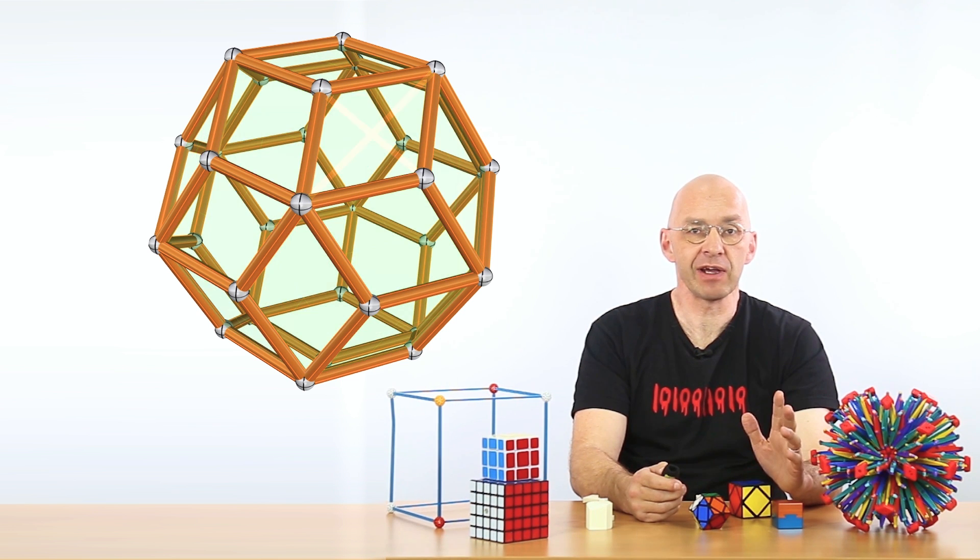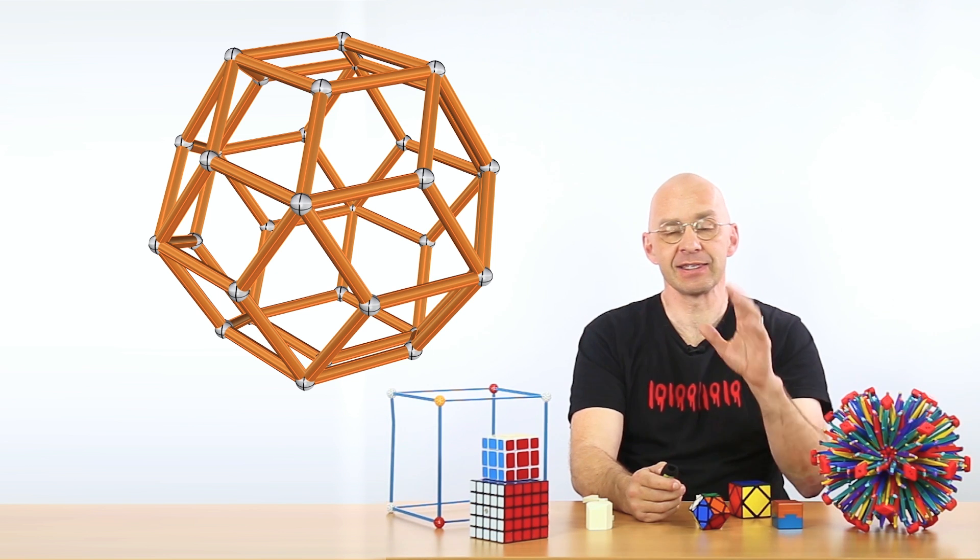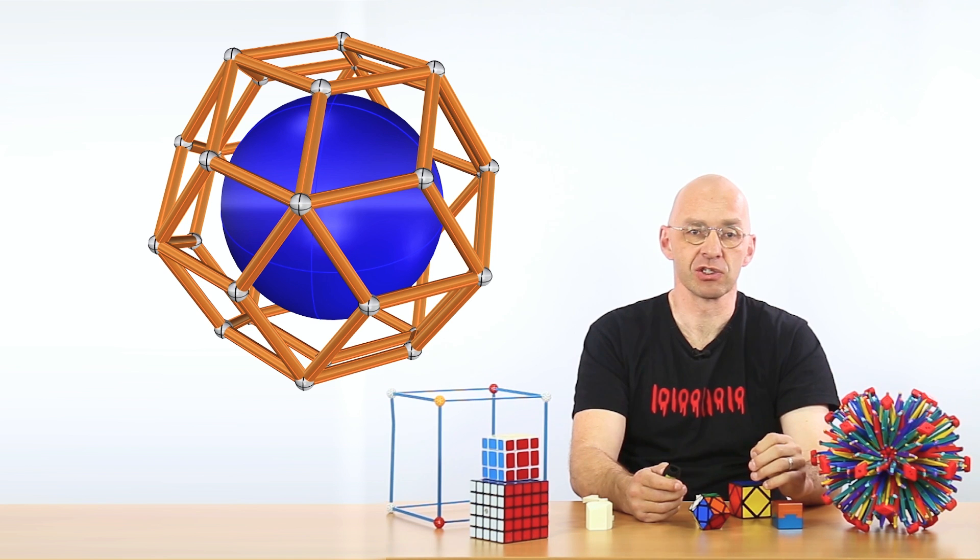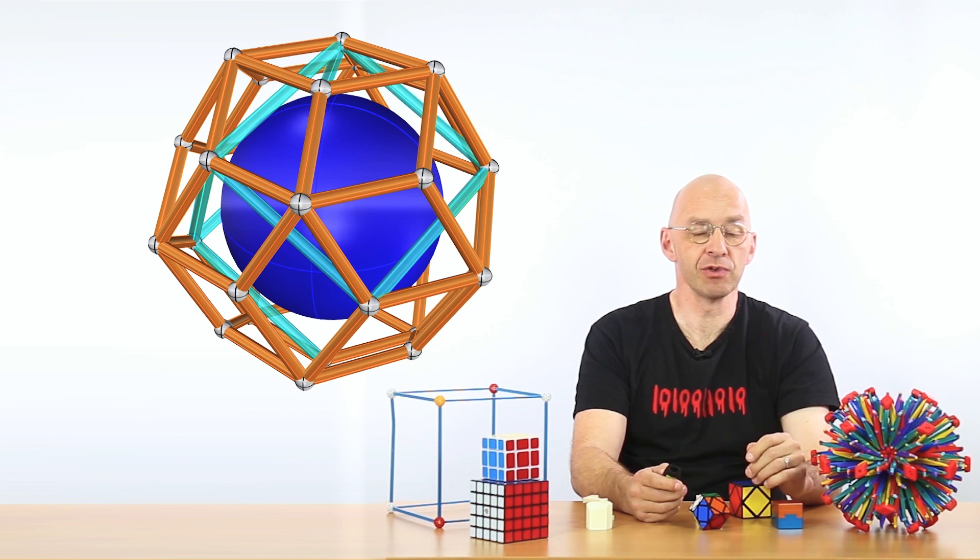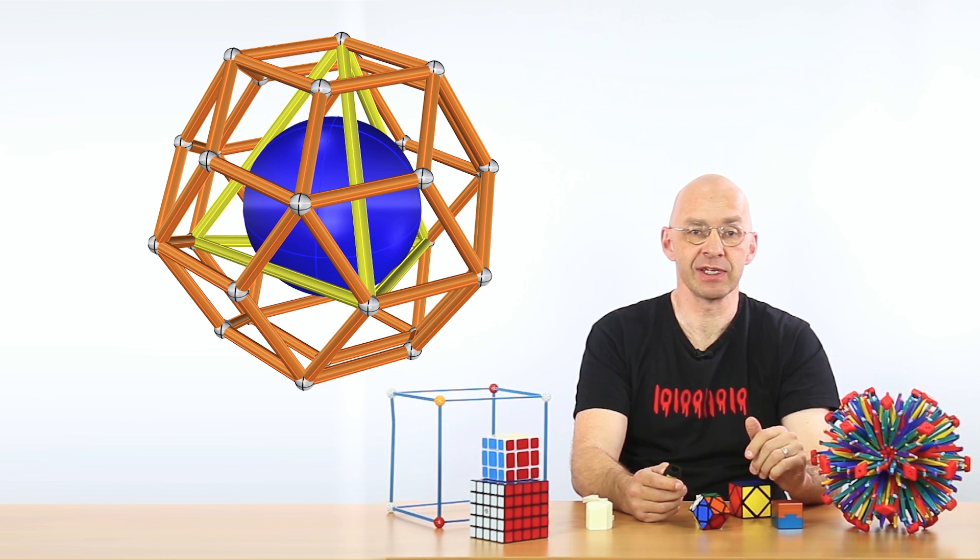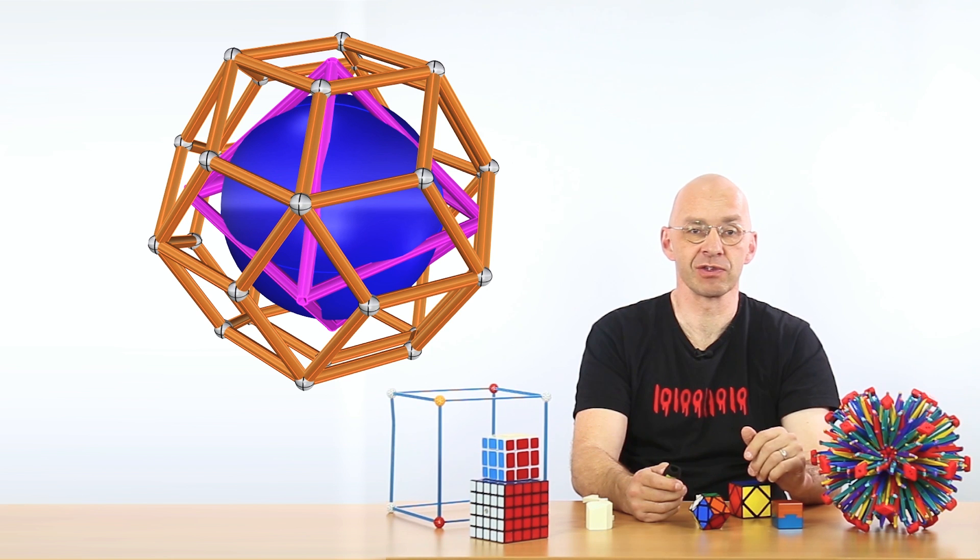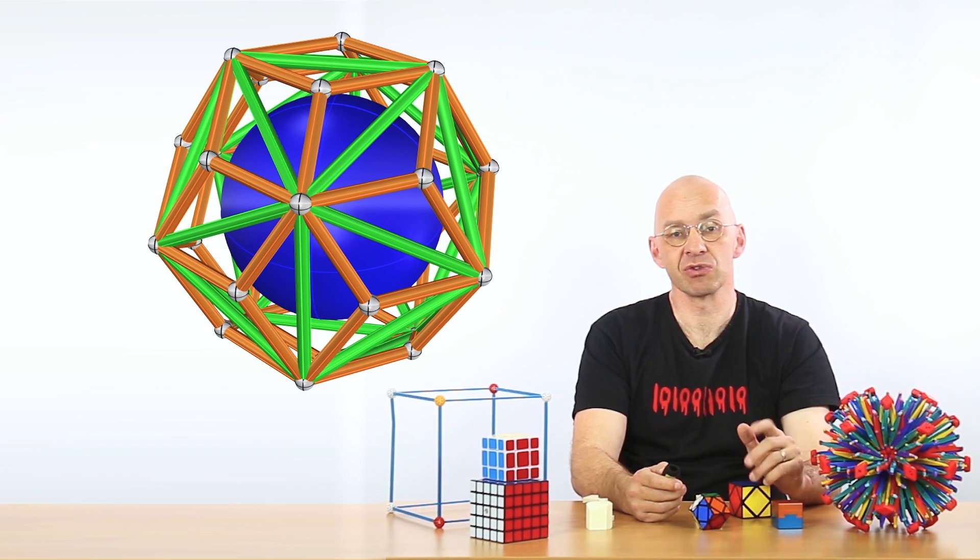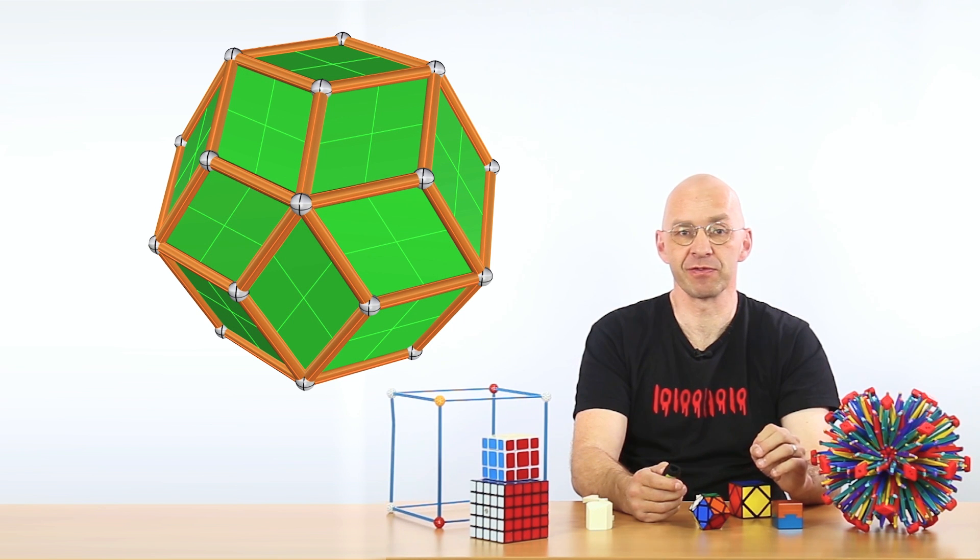If we just look at a wireframe of this triacontahedron, you get this, and inside you find all the regular solids of 3D. So for example, here we find a cube. There's actually quite a few cubes in there. There's a dodecahedron, there's a tetrahedron, again lots of those in here, there's an octahedron, again lots of those in here, there's an icosahedron, and well much much more stuff to be found in here.